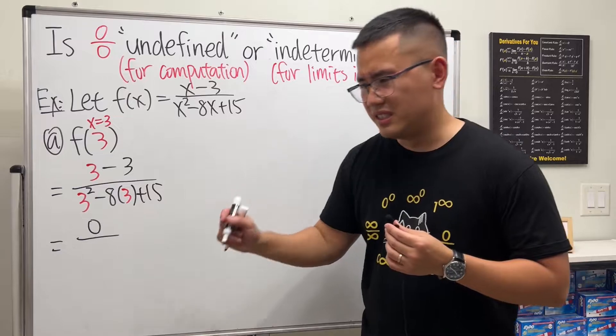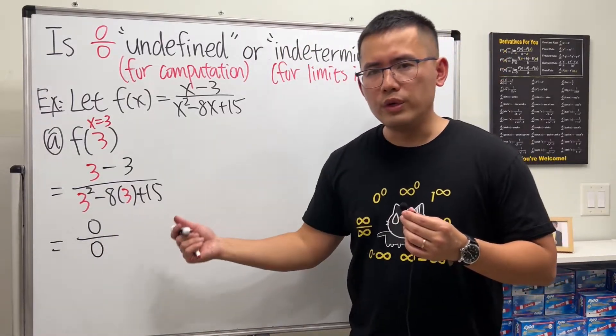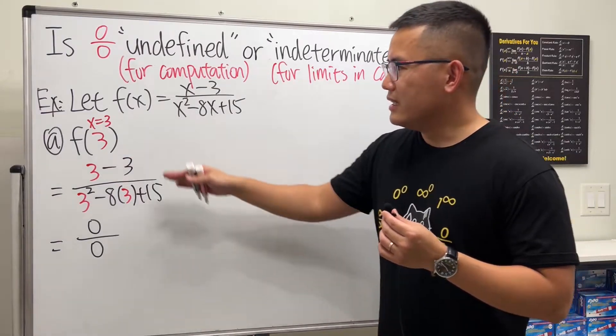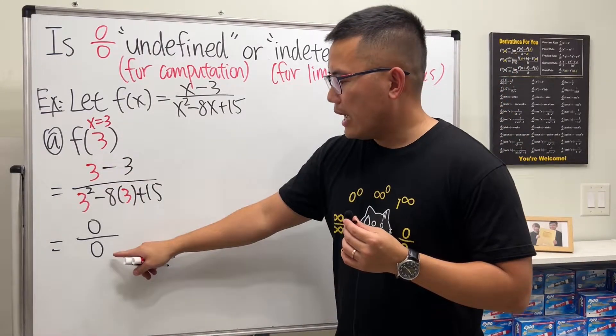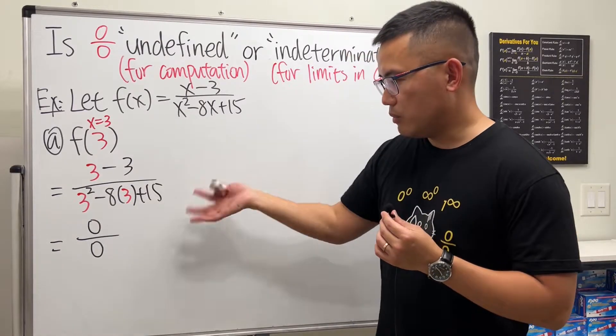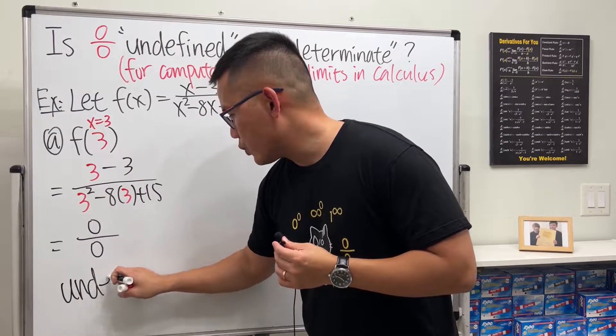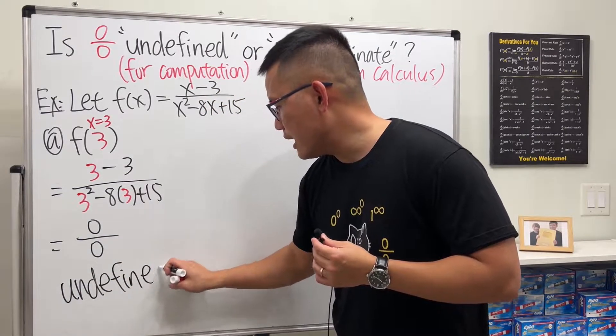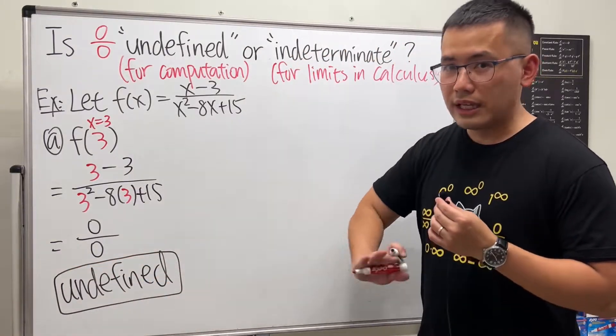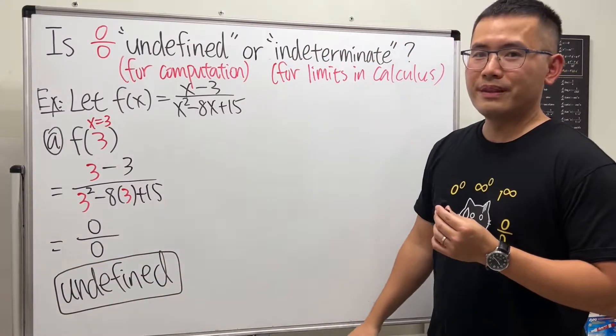On the top we get zero, and on the bottom this is 9 minus 24, which is negative 15 plus 15, we get zero. So as you can see, we have a zero over zero. So what do we do? Well, it's just a regular computation. As long as we have zero on the bottom, we can just say it's undefined and then move on.